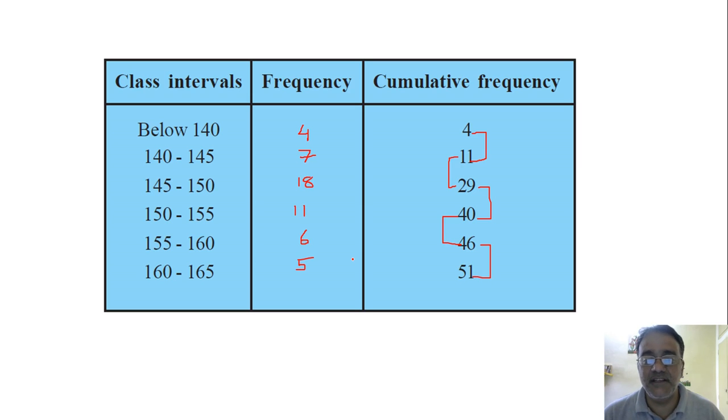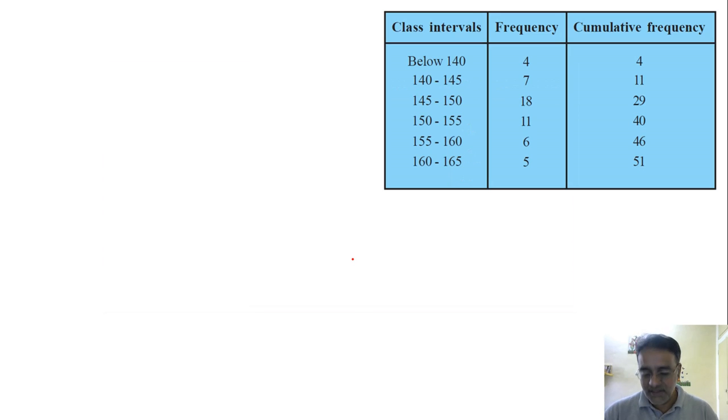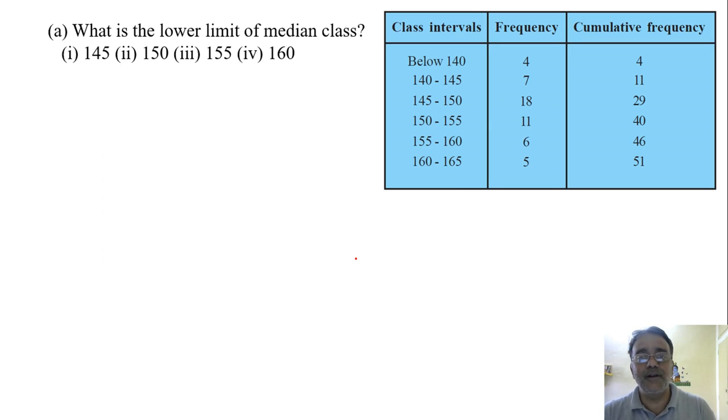So we'll get the frequency as 4, 7, 18, 11, 6, 5. Now we'll move toward the first question. What is the lower limit of the median class? So we will find the value of 51 by 2, that is n by 2. 51 by 2 is 25.5.